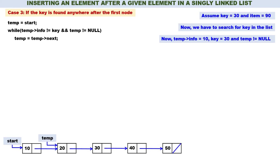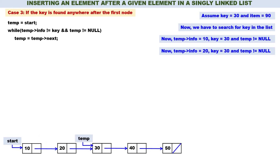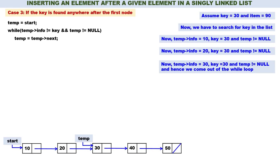Traversing: temp contains address of node 10 — temp of info is 10, key is 30, temp not null, so temp moves to next. Then temp is at node 20 — temp of info is 20, not equal to key, temp not null, so temp moves again. Now temp of info is 30, which equals key, so we exit the while loop. Exiting with temp of info equal to key means we have found key in the linked list.